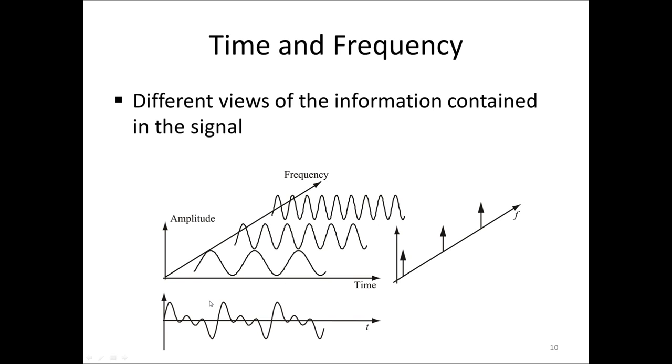In the time domain, for example, you can see the maximum and minimum value of the signal. But it is very hard to see what frequencies are in the signal. In the frequency domain, on the other hand, it is very easy to see which frequencies and even how high they are. But it is difficult to see the min and max of the signal.